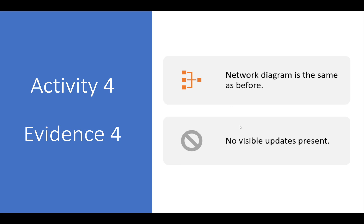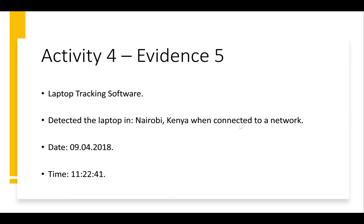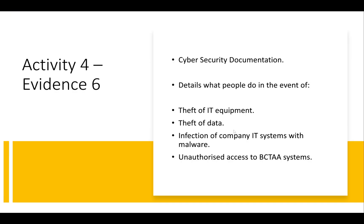Evidence 4, the network diagram, is the same as before with no visible updates. The 2018 past paper is linked in the description — it's the only one without a padlock. Evidence 5: laptop tracking software detected the laptop in Nairobi, Kenya when it connected to a network on 9th April 2018 at 11:22 AM — very far from the UK. Evidence 6 is the cybersecurity documentation detailing what to do in the event of theft of IT equipment, theft of data, malware infection, or unauthorised access to BCTAA systems.